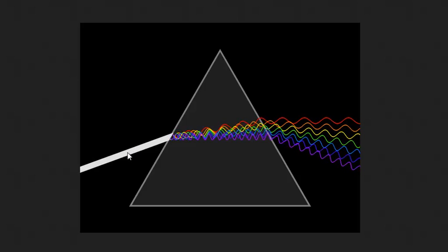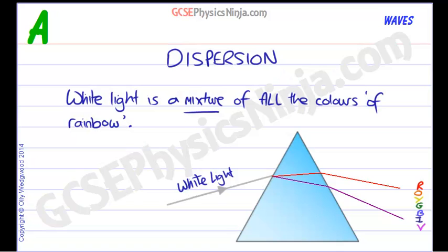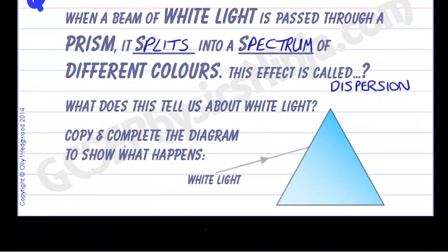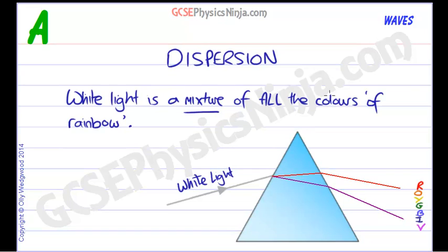This is called dispersion and I think we've answered all the questions here. We've copied and completed the diagram. What does this tell us about white light? White light is a mixture of all of the colours, and we may put here all of the wavelengths of visible light. It's probably a more scientific way of writing it.